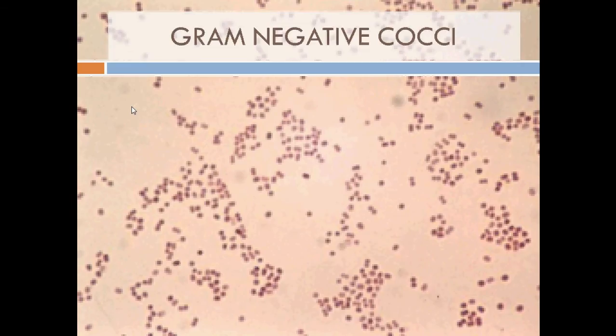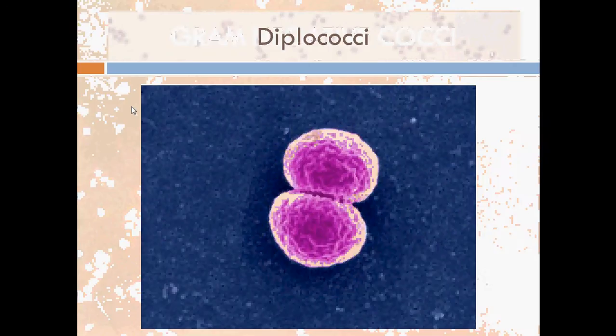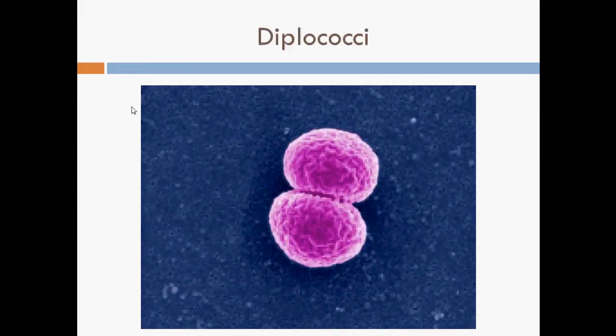Hello everybody, today we are going to look at gram-negative cocci. These are bacteria that take up the counter-stain safranin instead of retaining crystal violet, hence they appear pink under the microscope right after gram-stain. The bacteria we are going to look at take up this particular morphology called diplococci, which means paired spherical bacteria.